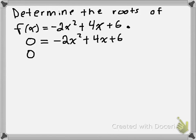So in this case we get 0 = -2, open bracket. Dividing -2x² by -2 gives us x² left over. Positive 4x divided by -2 gives us -2x, and positive 6 divided by -2 leaves us with -3. So what we have inside the brackets is a simple quadratic trinomial.